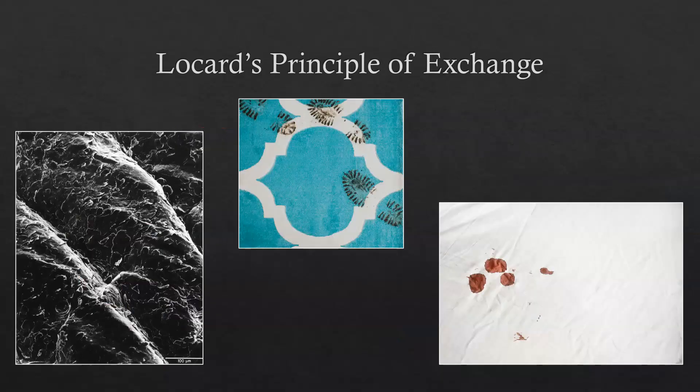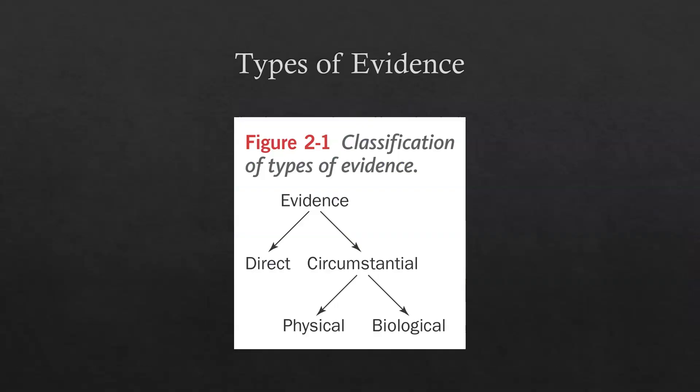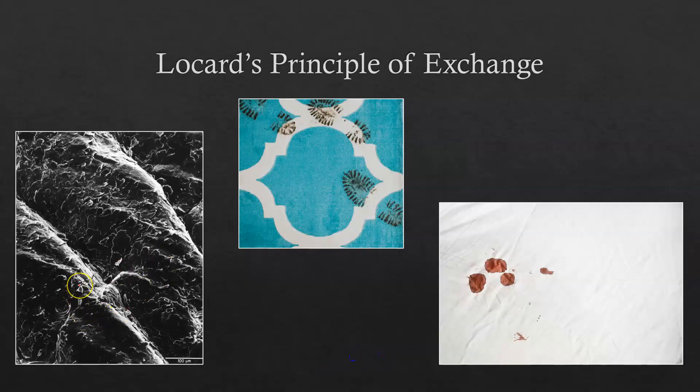Another perfect example of Locard's Principle of Exchange is human skin cells. This is a close-up electron micrograph of human skin, and you can tell that skin cells are flaky — we are constantly shedding or flaking off skin cells, and those cells can be transferred to the things that we touch. There are skin cells all over your house, your clothes, your car. You can't help it — you're constantly leaving them behind everywhere you've been.